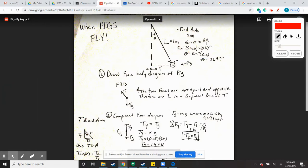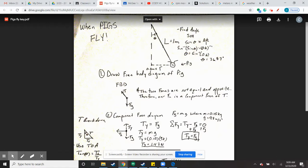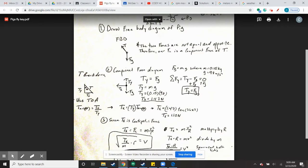Now, once we have the angle, which is 36.87, that'll come back later. We want to draw the free-body diagram for the pig on the conical pendulum. My free-body diagram is right here.